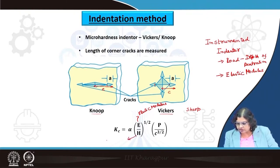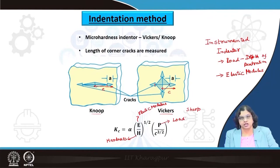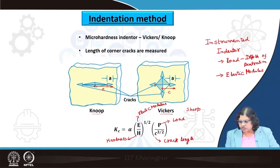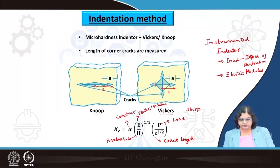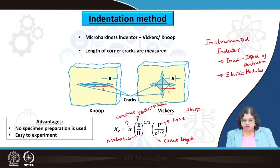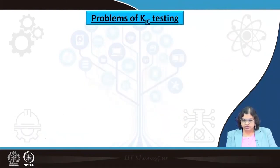From the indentation test, hardness H and load P are directly recorded. Using the crack length C and elastic modulus E, the fracture toughness K can be calculated using the relation involving calibration constant α (typically around 0.16). The main advantage of this method is that no specimen preparation is required and it is easy to handle and perform.